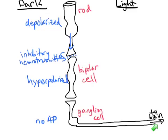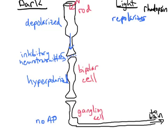Now let's talk about how this changes when you have light energy coming in and hitting that rhodopsin molecule in the photoreceptor cell. Rhodopsin is the molecule within rod cells that actually responds to light. When a photon of light hits rhodopsin, that actually causes the sodium channels in rod cells to close. So the rod cell actually repolarizes. Since the rod cell is repolarized, it's no longer firing an action potential, and it's also no longer releasing any inhibitory neurotransmitters.